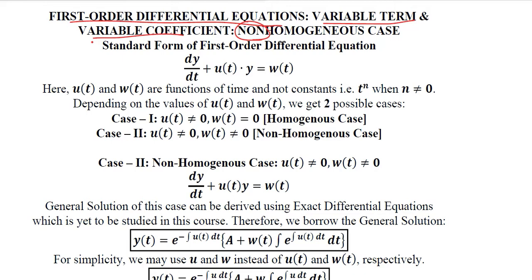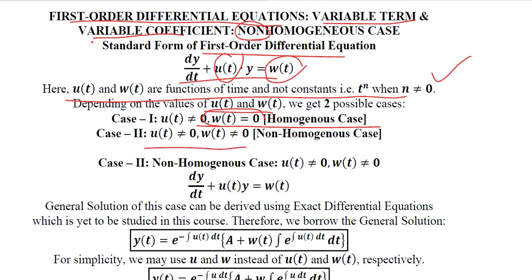This is the first-order differential equation with variable coefficient and variable term. This is the definition that we have already understood before and in the homogeneous case. UT and WT are in terms of T. This was the homogeneous case where WT was 0, but this is the case where WT is not equal to 0, making it a non-homogeneous case.